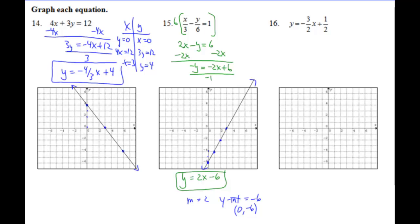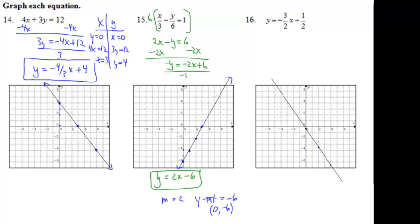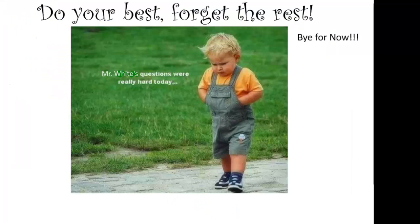For number 16, the equation y equals negative 3/2 x plus 1/2 is already in slope-intercept form. Starting at the y-intercept of 1/2, we go down 3 and over 2 repeatedly to plot points. Connecting those three points gives us our line. Congratulations — do your best on the assignment. Bye for now.